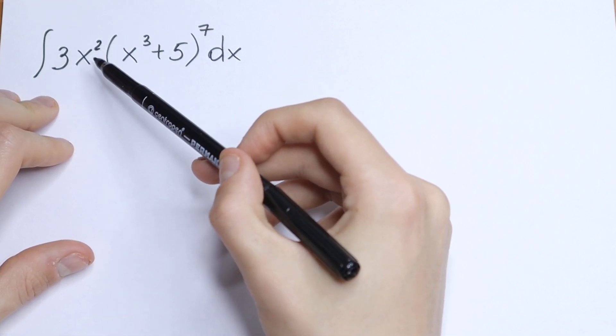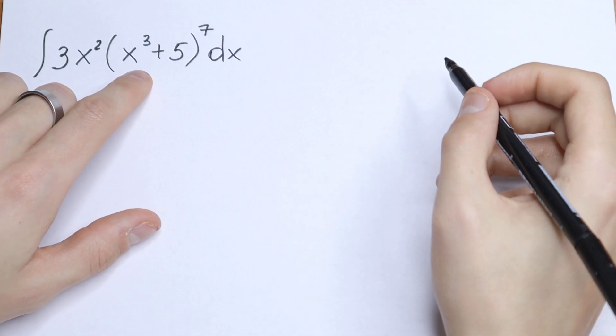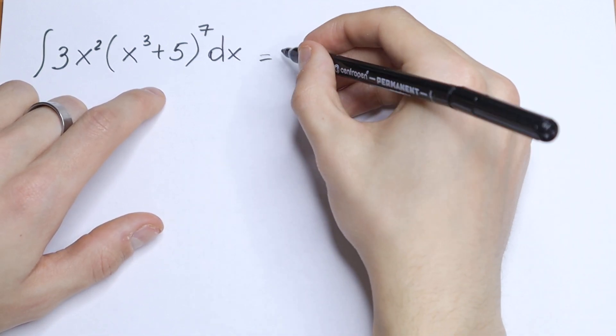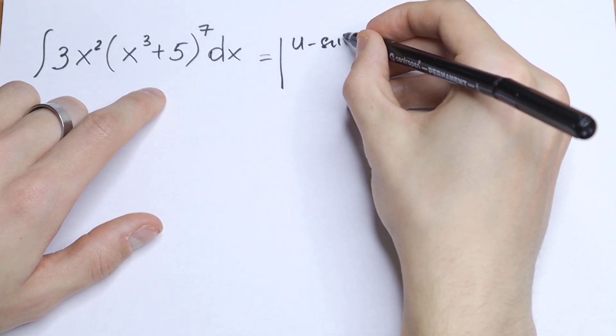What is the integral of the function 3x squared times x cubed plus 5 raised to the 7th power? How can you solve this? I want to suggest a little trick right here, a u method. Let's use u substitution.